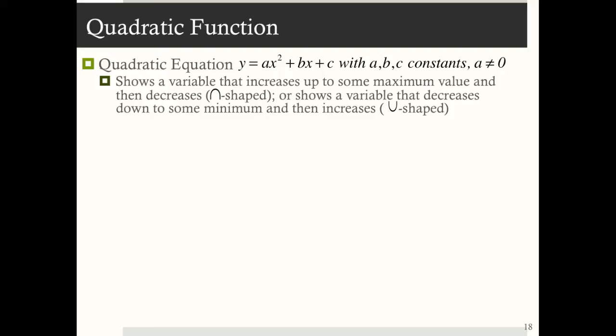If a were equal to zero, the quadratic equation would simplify to a linear equation, and this isn't what we're interested in. A quadratic equation can show one of two things: a variable that increases up to some maximum value then decreases — in other words, an upside-down u — or it can show a variable that decreases down to some minimum and then increases, in other words, a u.